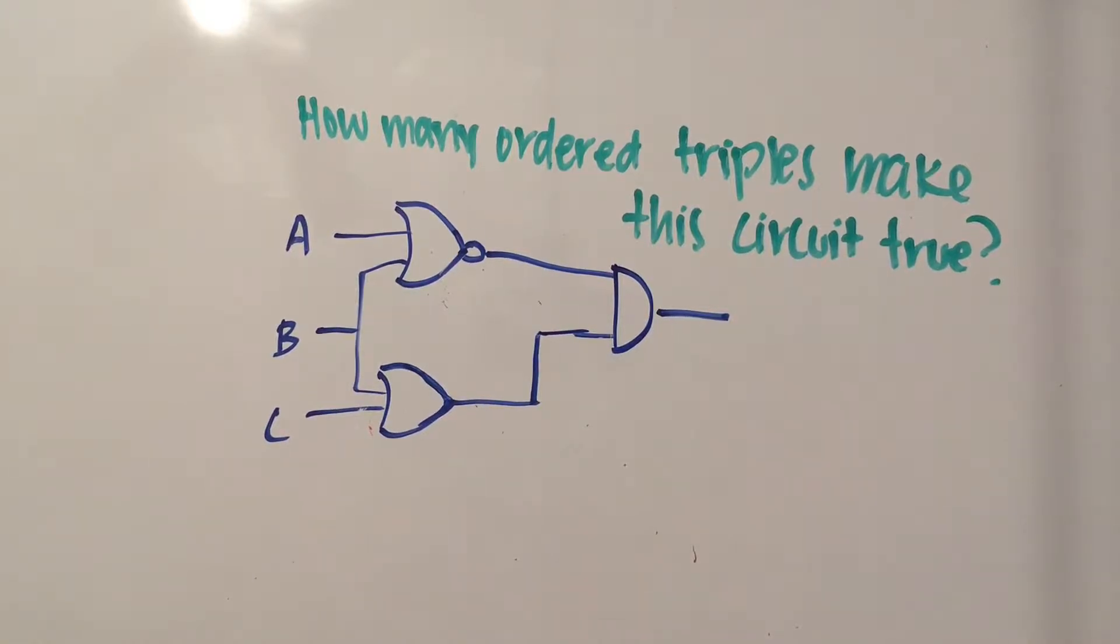This question is asking us how many ordered triples make this circuit true, and what that basically means is that we need to find any combination or multiple combinations of A, B, and C that when we put them into the circuit, it results in true.